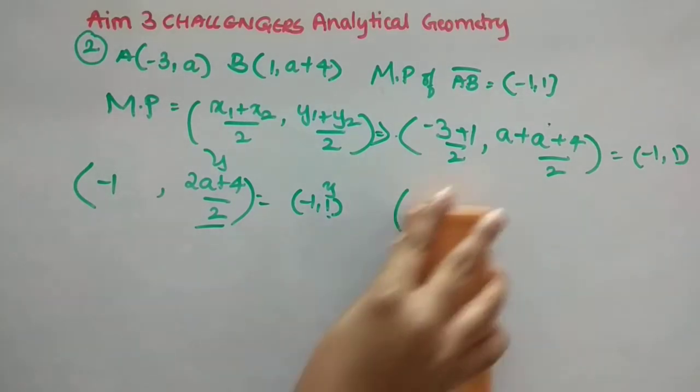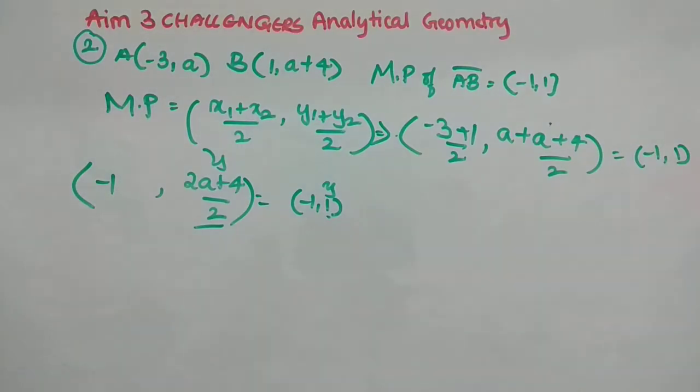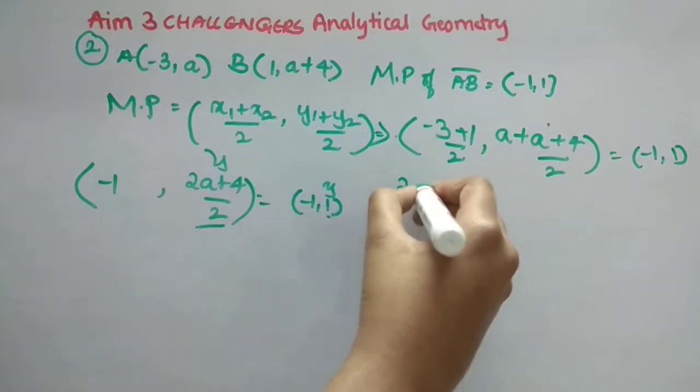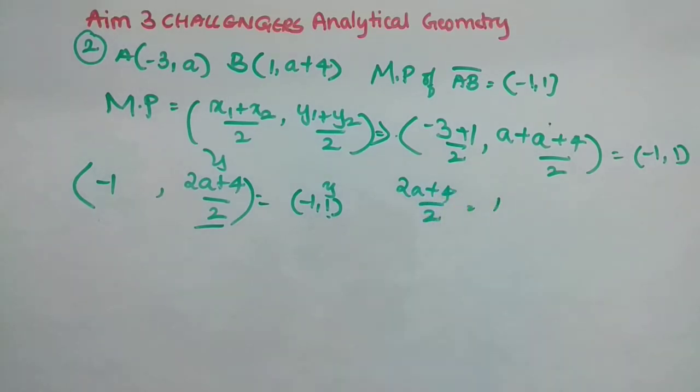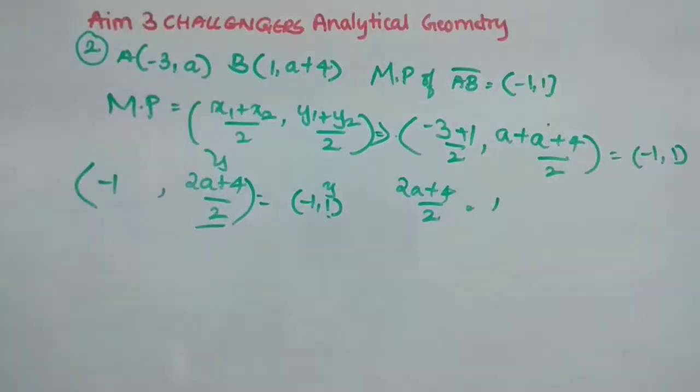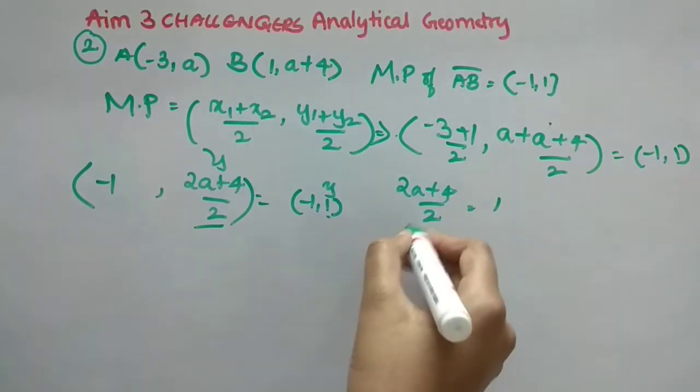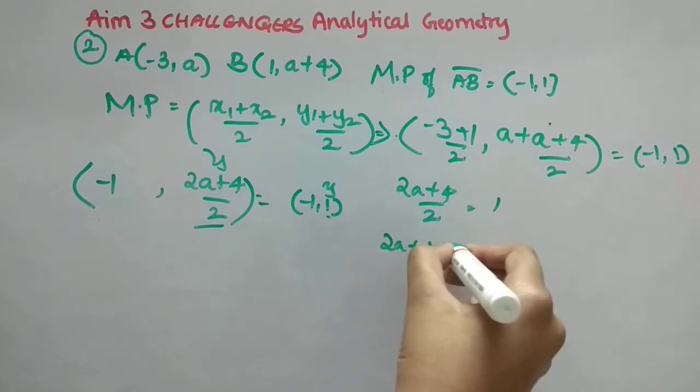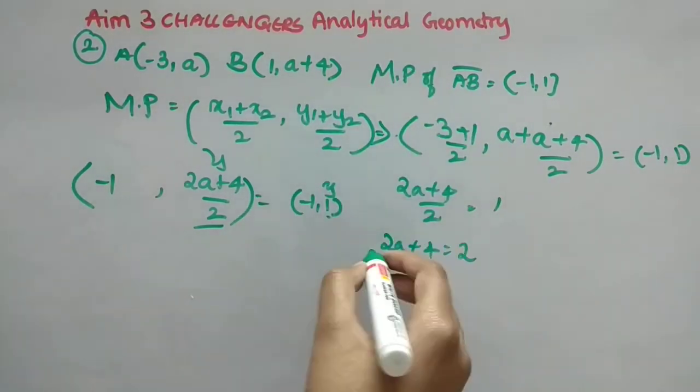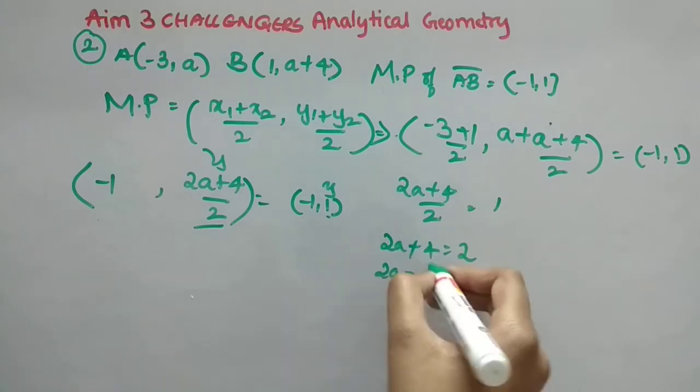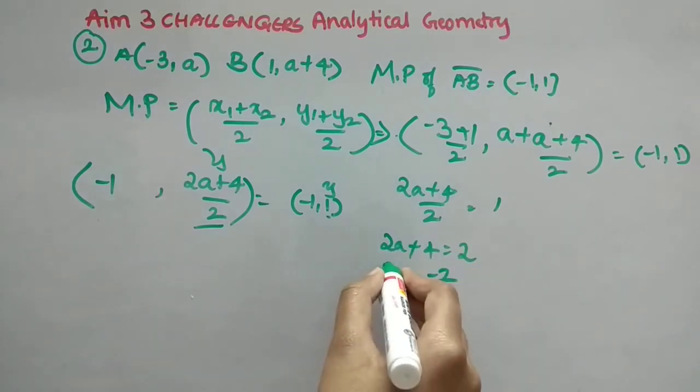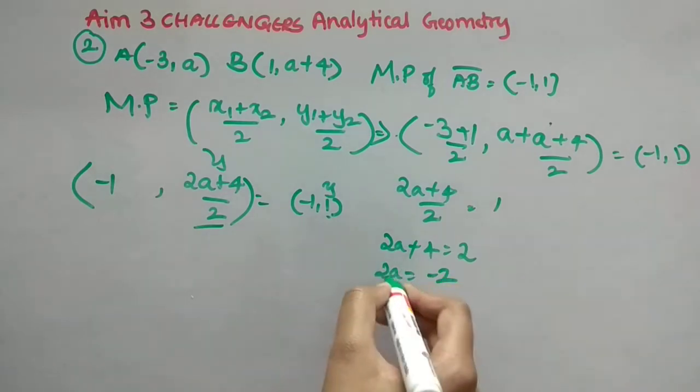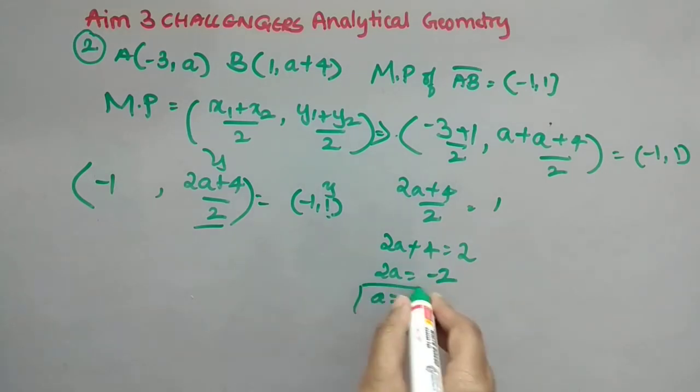So what I will be doing here, I will be equating them. That means, 2A plus 4 by 2, this equation, I will equate to plus 1. So 2 I will send to LHS means into 2. So 2A plus 4 is equal to 2. Now plus 4, if I send to RHS, it is minus 4. So 2 minus 4 is minus 2. So here, this 2 and 2 cancel, so A value is minus 1. Box it off. So that is the answer. I hope you understood, it was not so tough.